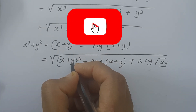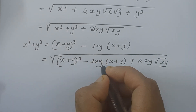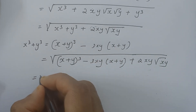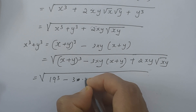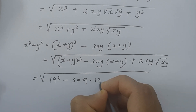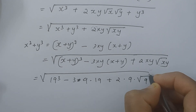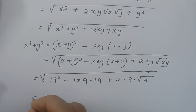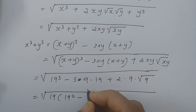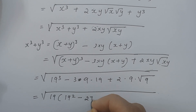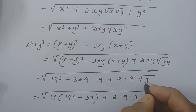x plus y is given in the question, and xy is given in the question. So we apply x plus y equals 19 and xy equals 9. Which gives us the square root of 19³ minus 3 times 9 times 19 plus 2 times 9 times √9. So that is the square root of 19 times (19² minus 27) plus 2 times 9 times 3.